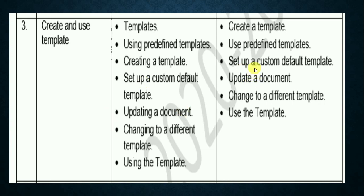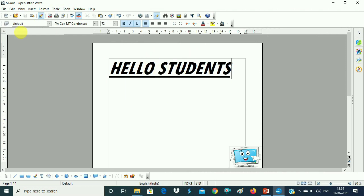Now our third point is: Set Up a Custom Default Template. A template you have made will be set as your default custom template. Next time when you open any file, the same formatting features will open. So now we have the file with 'Hello Students' written, file name saved as S1, and its font name, size, and bold italic underline effects. When we open a new file, normally a blank document opens, but this time it will open with the custom default template.